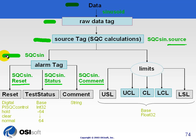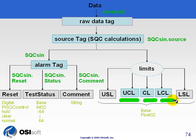All other tags created are based on that naming convention — reset tags, status tags, comment tags, source tags, etc. In addition to those, we have the upper and lower control limit tags: UCL, CL, and LCL — that's the upper control limit, the center line, and the lower control limit. That completes the list of required tags, shown in the illustration with a distinct color. We historize those tags and they carry the extensions UCL, CL, and LCL.